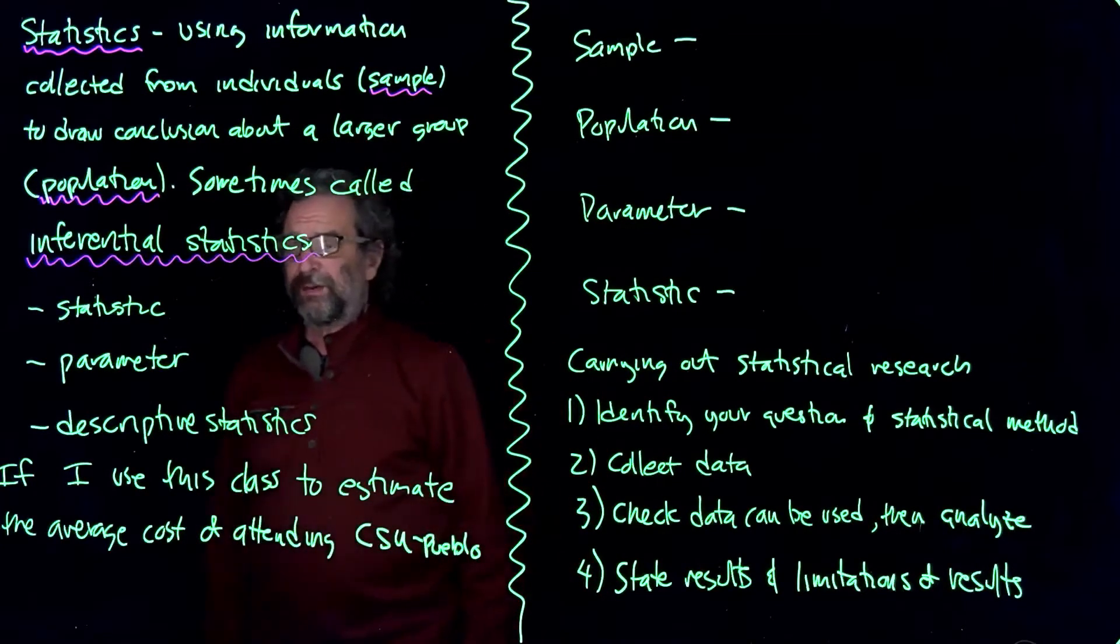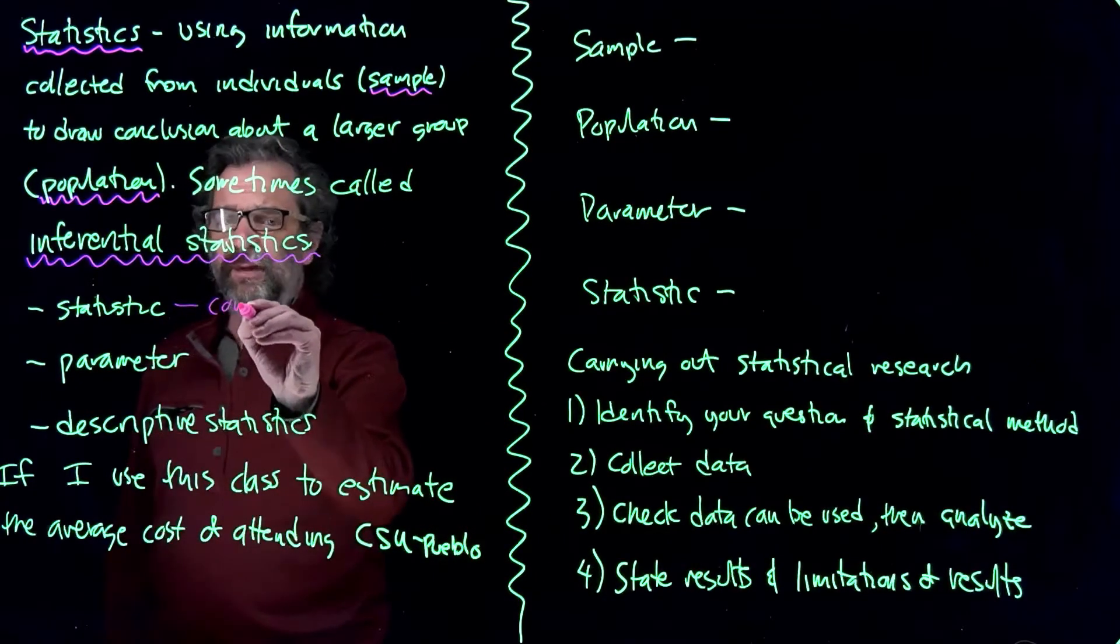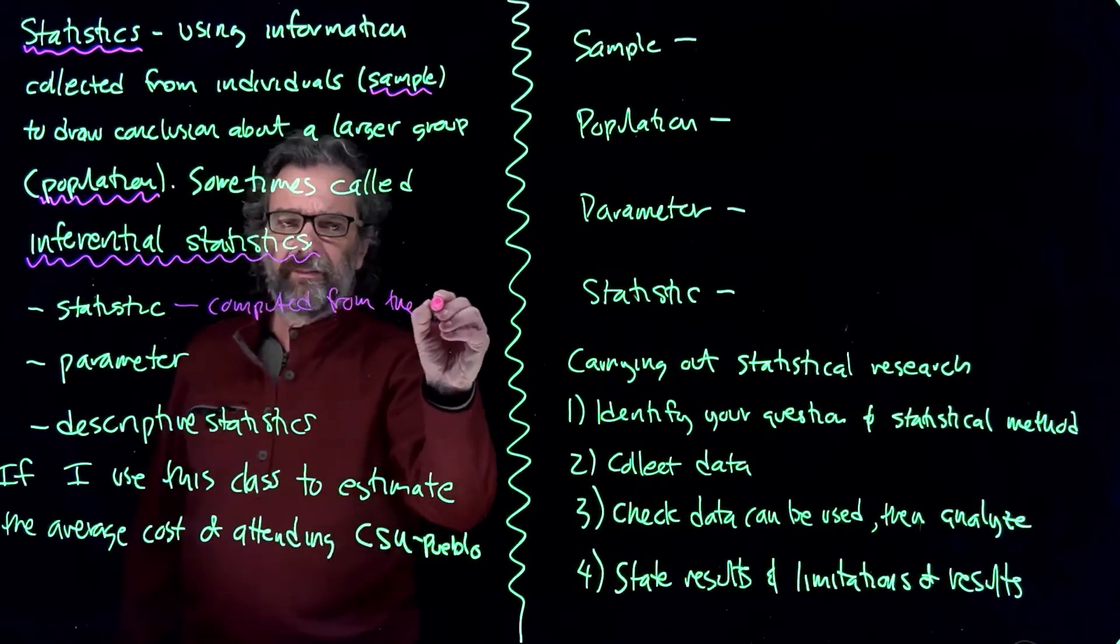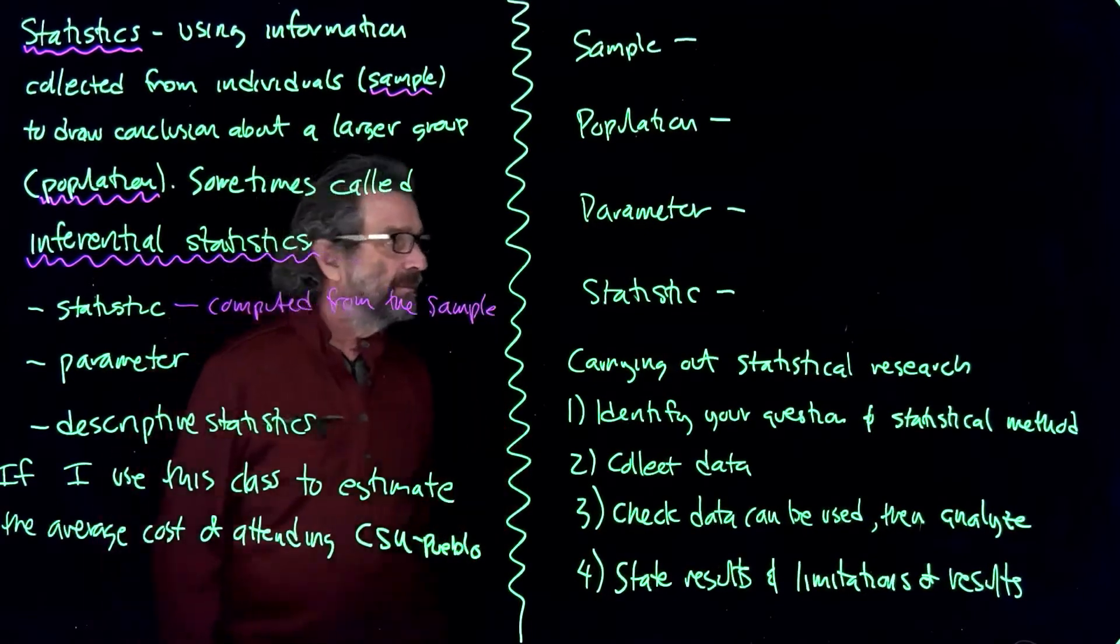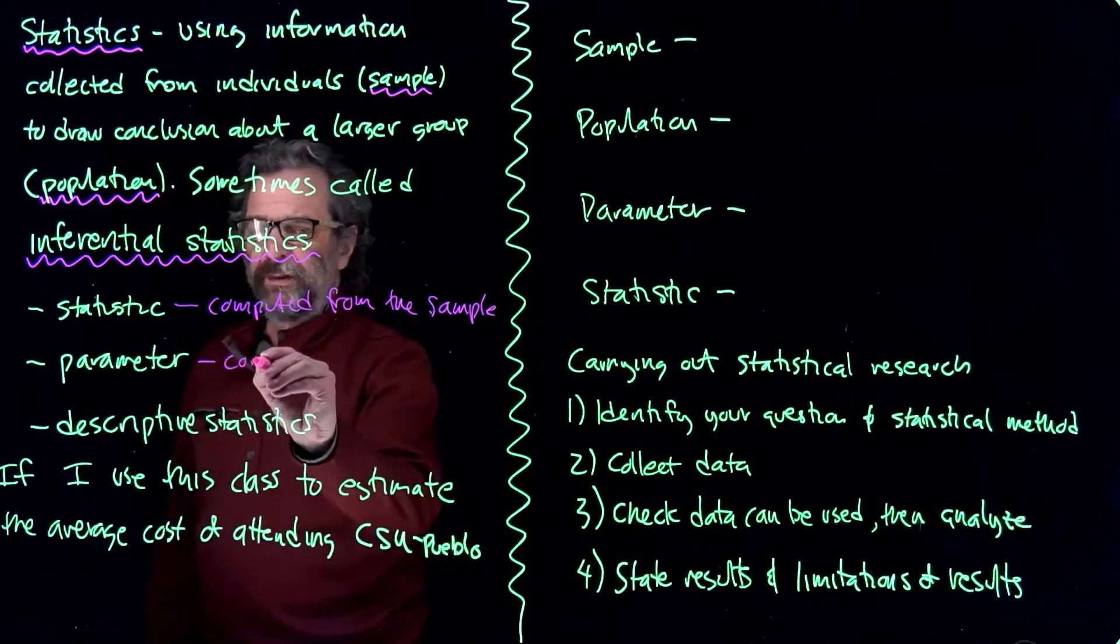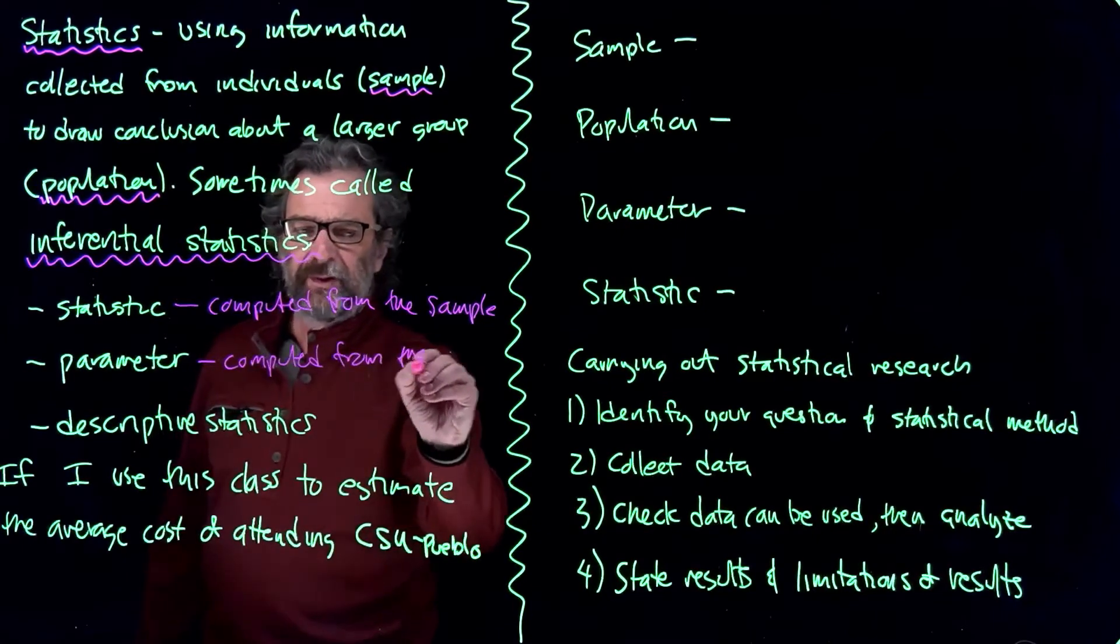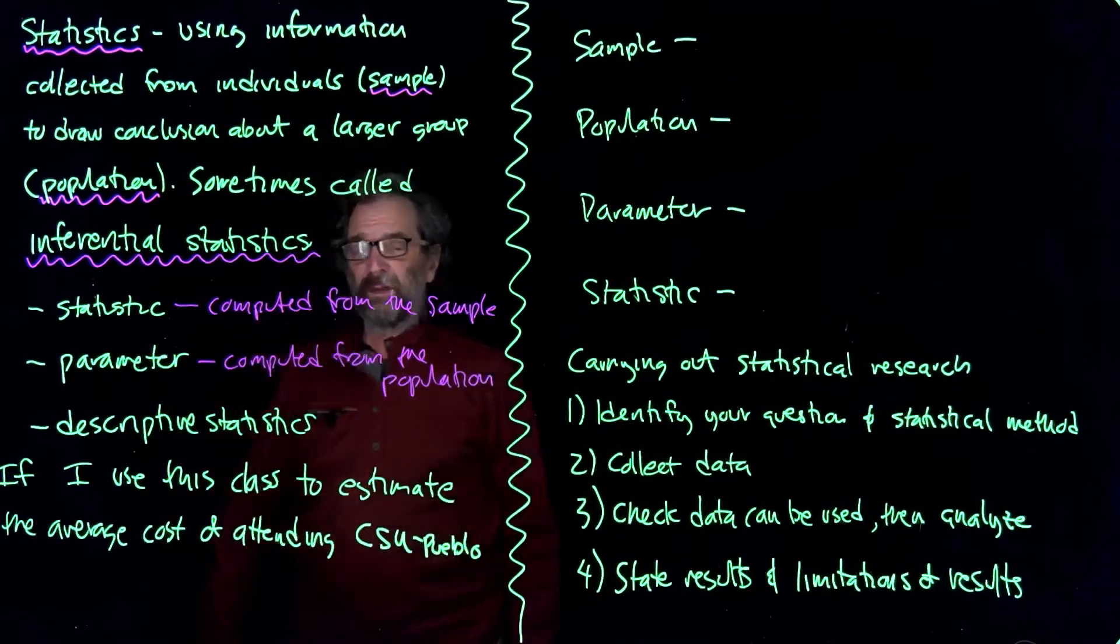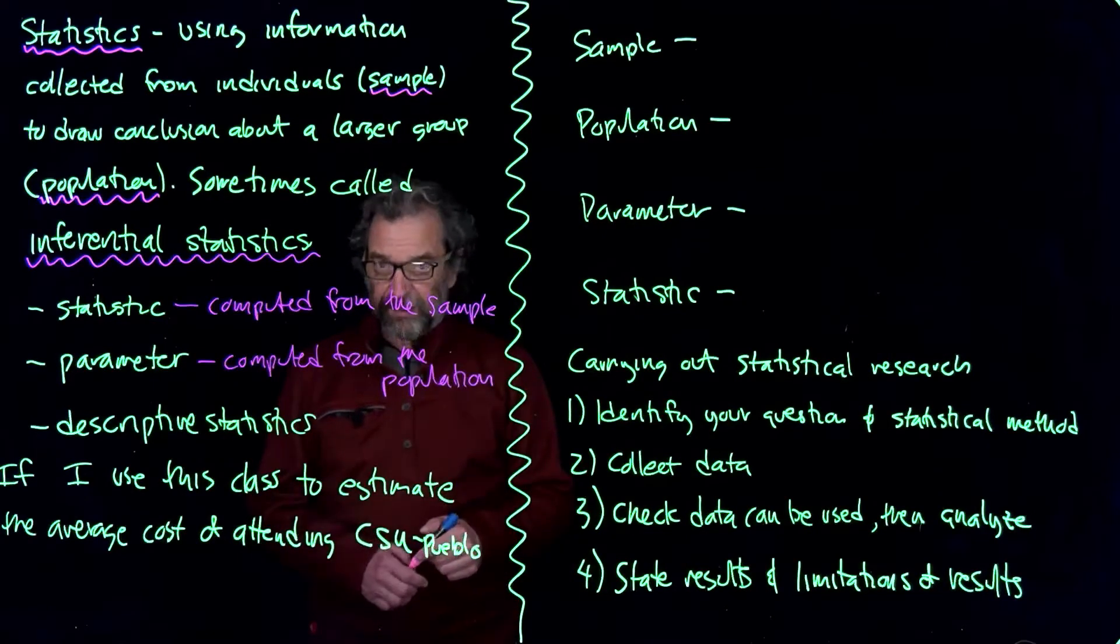In the process, we might be talking about statistics. Statistics is something computed from the sample, maybe like the sample mean, and the parameter is computed from the population. The population is the group you want to know about. So the population is something that you get to decide as a researcher.